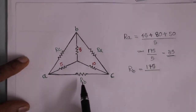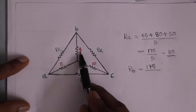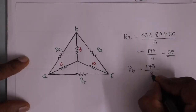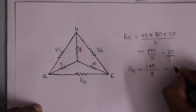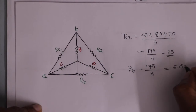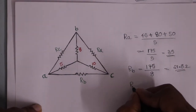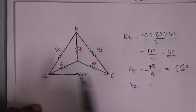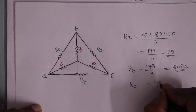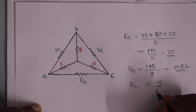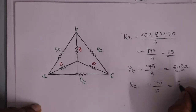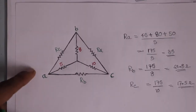RB is equal to 21.8 ohms. Next, RC is equal to — the numerator is 175, divided by the opposite resistance, which is 10 ohms. RC is equal to 17.5 ohms.